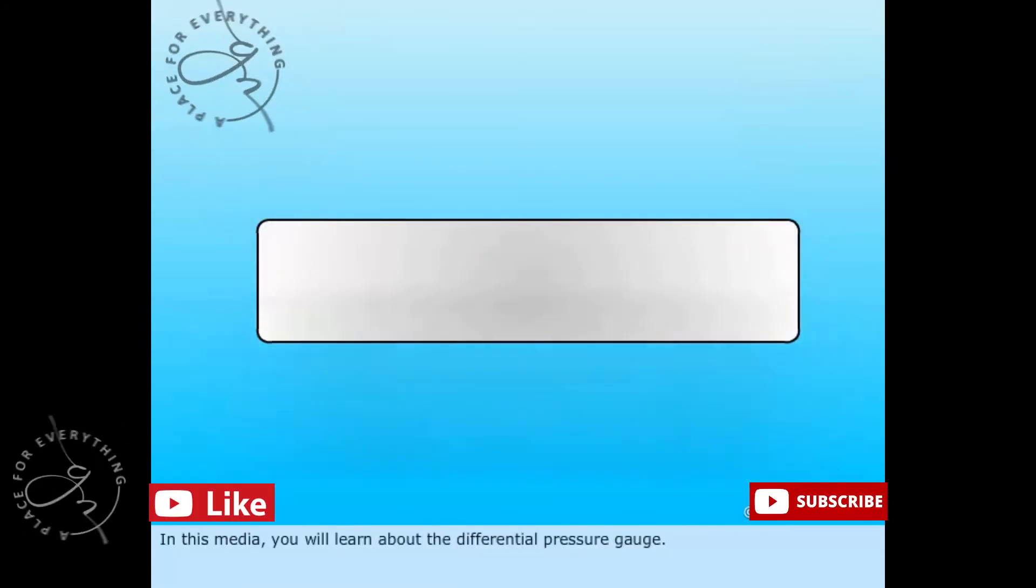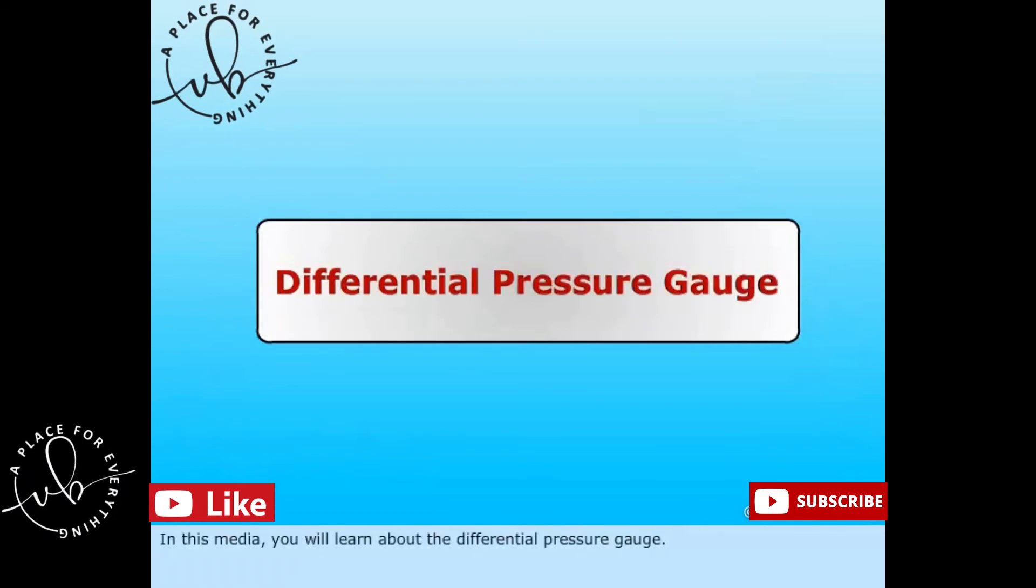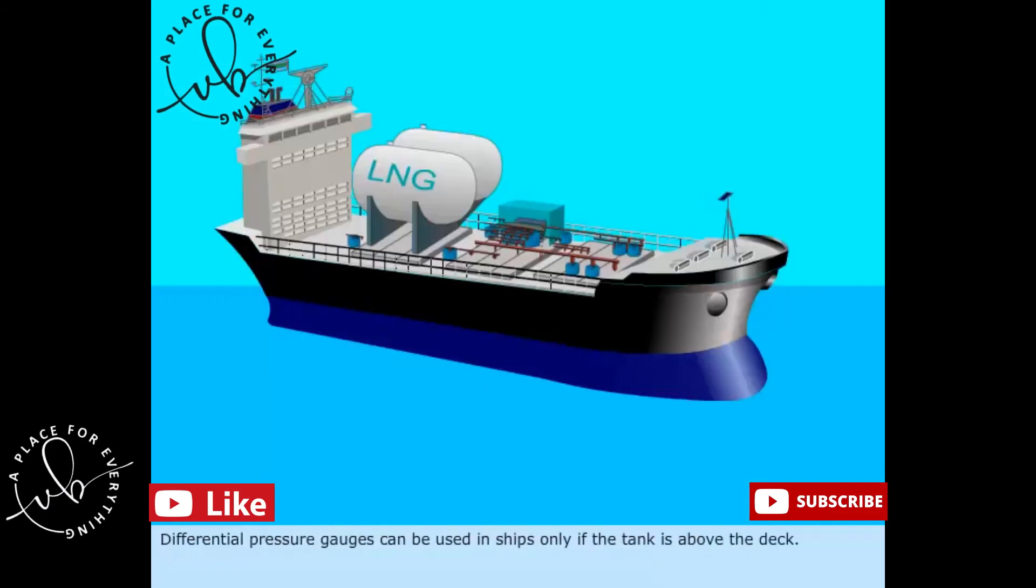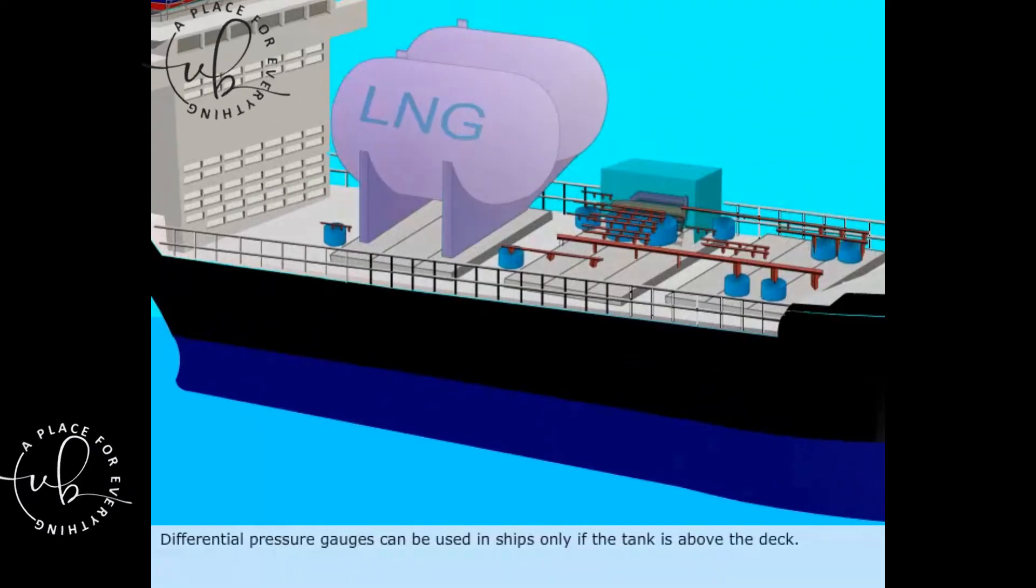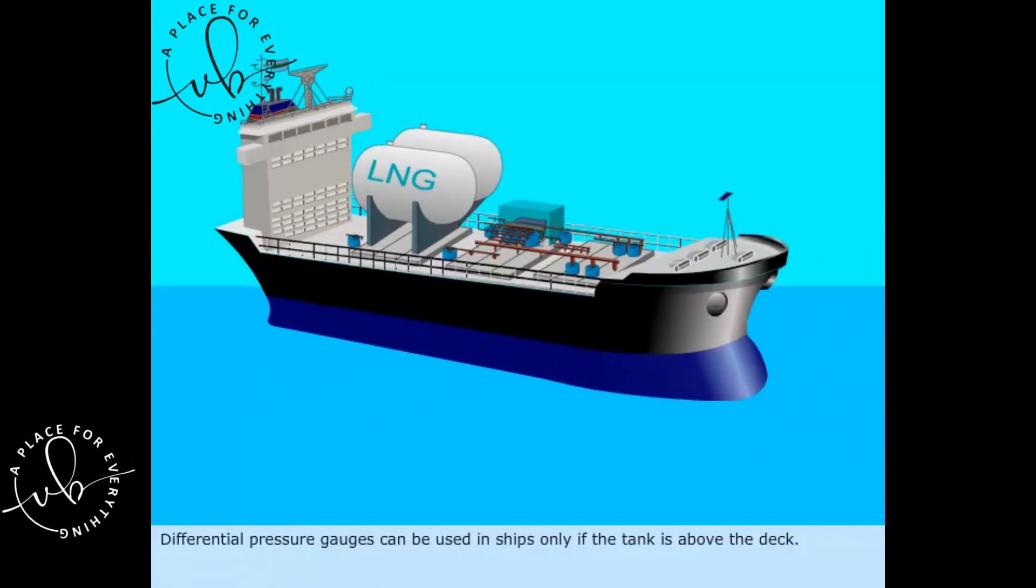In this media, you will learn about the differential pressure gauge. Differential pressure gauges can be used in ships only if the tank is above the deck.